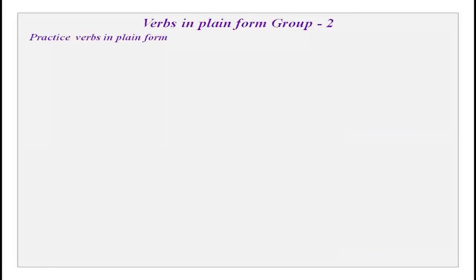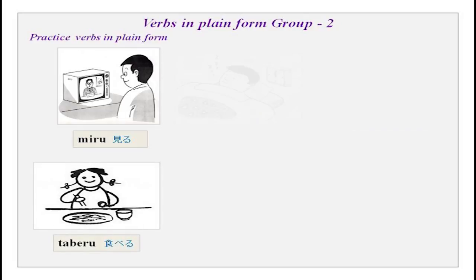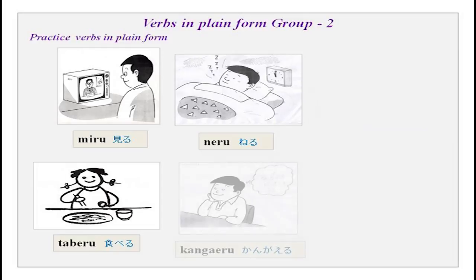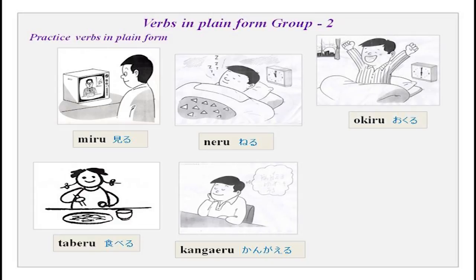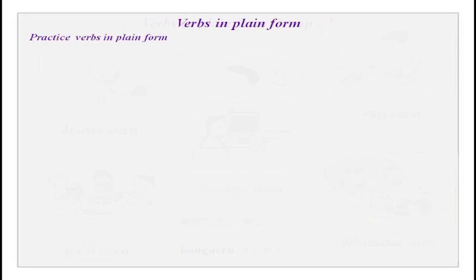Group 2 verbs in plain form: miru — to see; taberu — to eat; neru — to sleep; kangaeru — to think; okiru — to get up; oshieru — to teach. Also hairu — to enter, as when someone is entering a room.